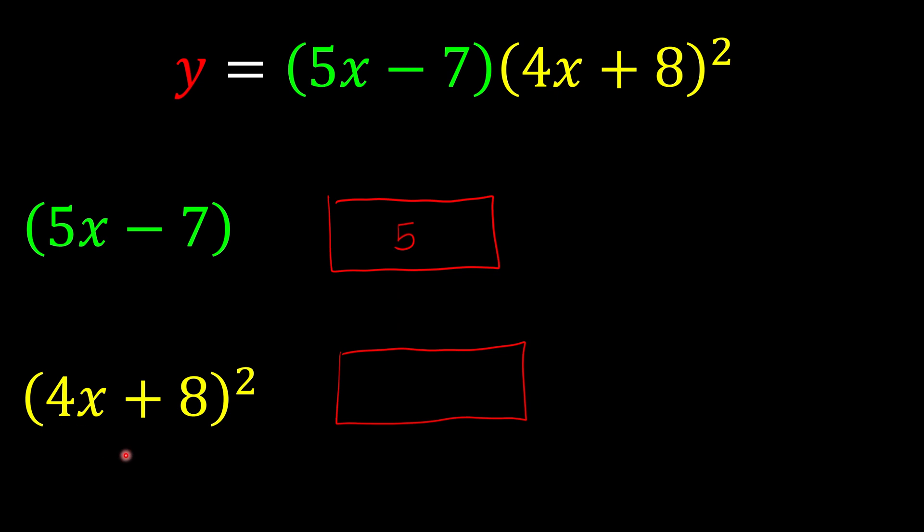Meanwhile, if you have something with a power, we treat this like a variable. So 2 goes to the front. We have 2(4x + 8).